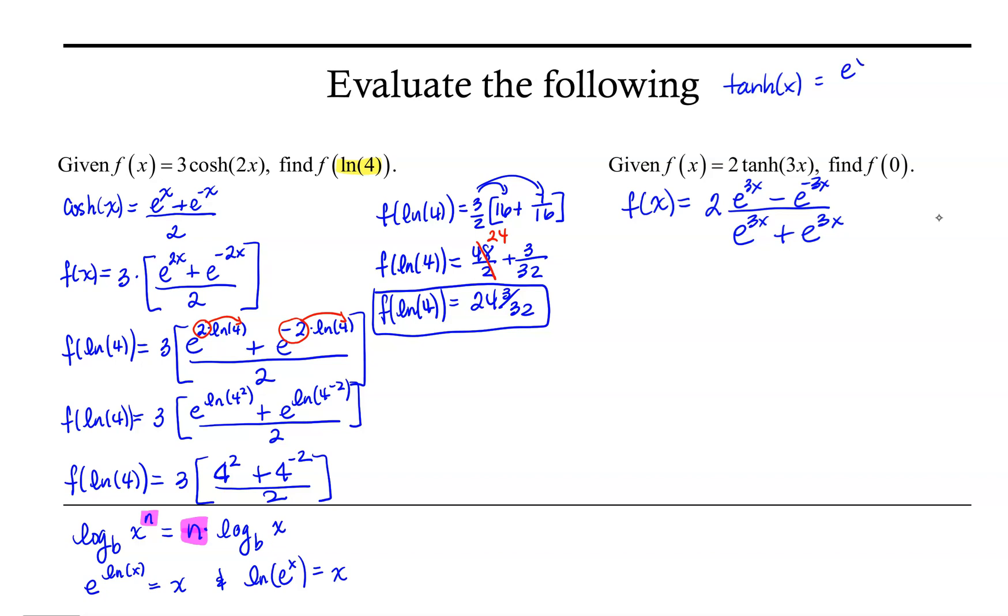Again, using the relationship we know about tanh, that it's e to the x minus e to the negative x over e to the x plus e to the negative x, simply replacing x with our argument that needs to be 3x.